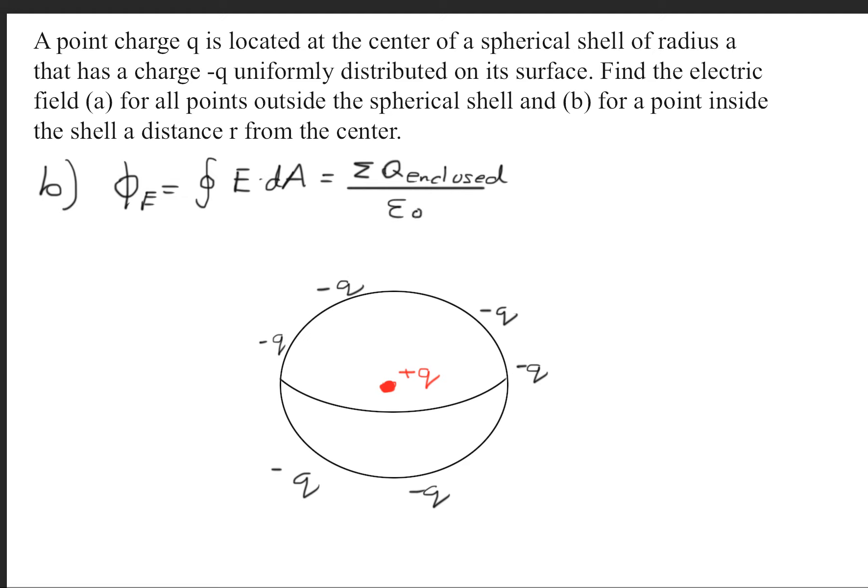In order to solve part B, once again, we use Gauss's law. And now we're going to pick a point inside the sphere. It's an arbitrary point. We'll choose that right there and create a Gaussian surface. So we have the circle right here.